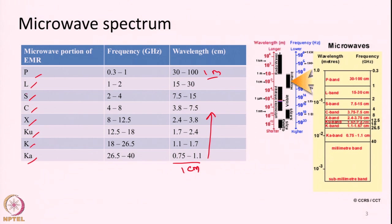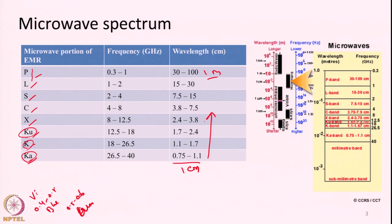This nomenclature — P, L, S, C, X — was developed in earlier days as secret codes during military applications, since one of the earliest applications of microwave was military surveillance. Random names were given to frequencies to keep them secret, and those names prevailed. Just as in the visible band we call 0.4 to 0.5 micrometers blue and 0.5 to 0.6 micrometers green, the microwave portion is a long section of the electromagnetic spectrum that we have divided into classes for remote sensing use.